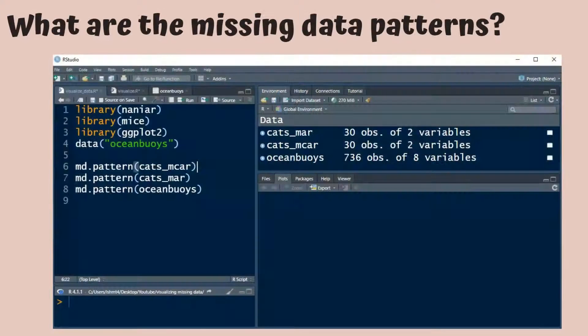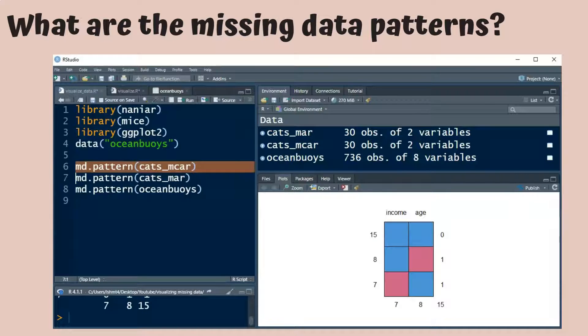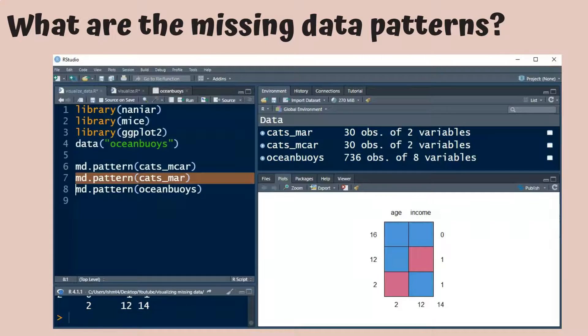We'll now look at how to visualize missing data patterns. And one way to do this is with the md.pattern command from mice. In this plot for the cats MCAR data set, each row is a missing data pattern. In the first pattern, both income and age are observed. There are zero missing variables, and there are 15 observations that fall into this pattern. In the second row, we see that there are eight observations where income is observed and age is missing. And in the third row, we see that there are seven observations where income is missing and age is observed.